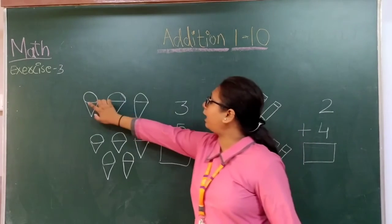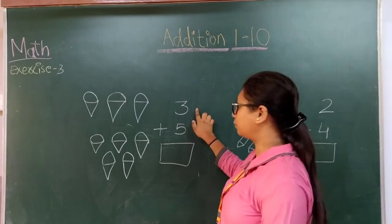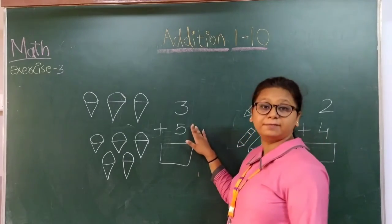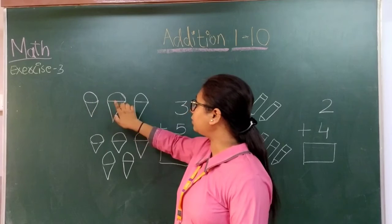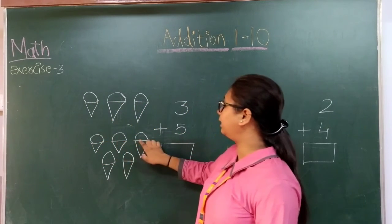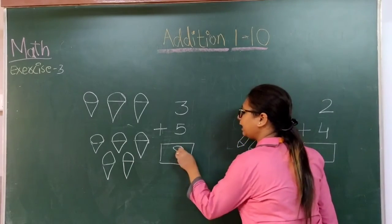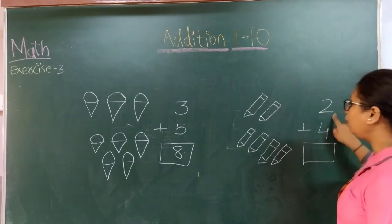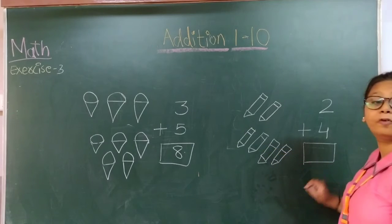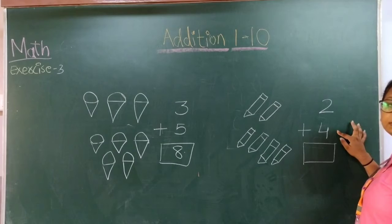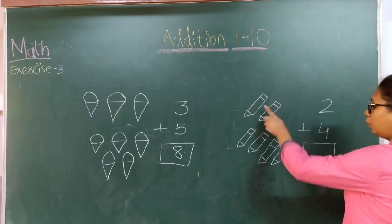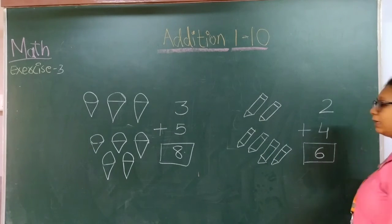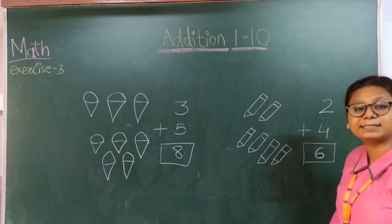Next one. 1, 2 and 3 ice creams over here — so 3. And 1, 2, 3, 4 and 5 ice creams over here — so 5. So 3 plus 5 equals: 1, 2, 3, 4, 5, 6, 7, 8 — how many? 8 ice creams in total. Next sum: 1 and 2 pencils over here — so 2. And 1, 2, 3, 4 pencils over here — so 4. So that becomes 1, 2, 3, 4, 5, 6 — how many? 6 pencils in total. So when I add 4 to 2, it becomes 6 in total.